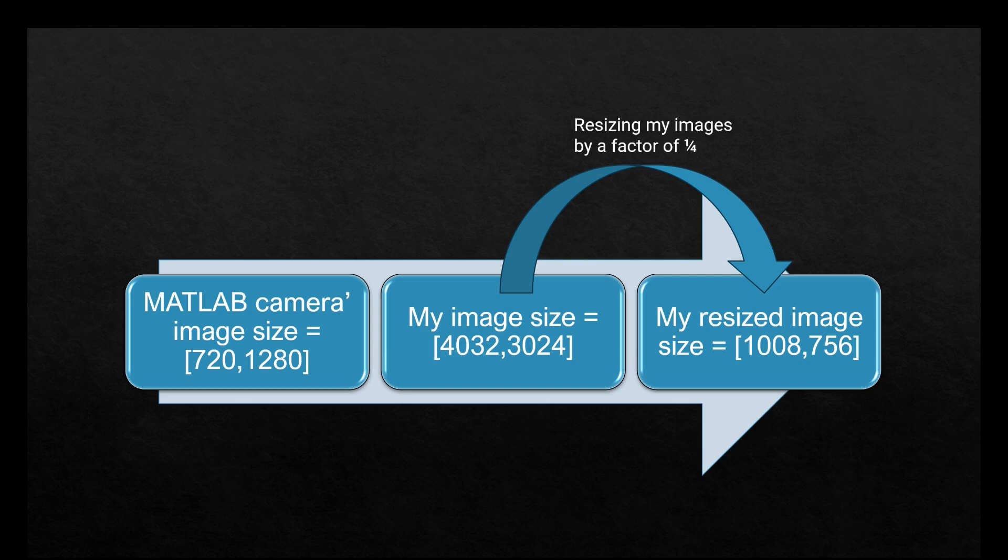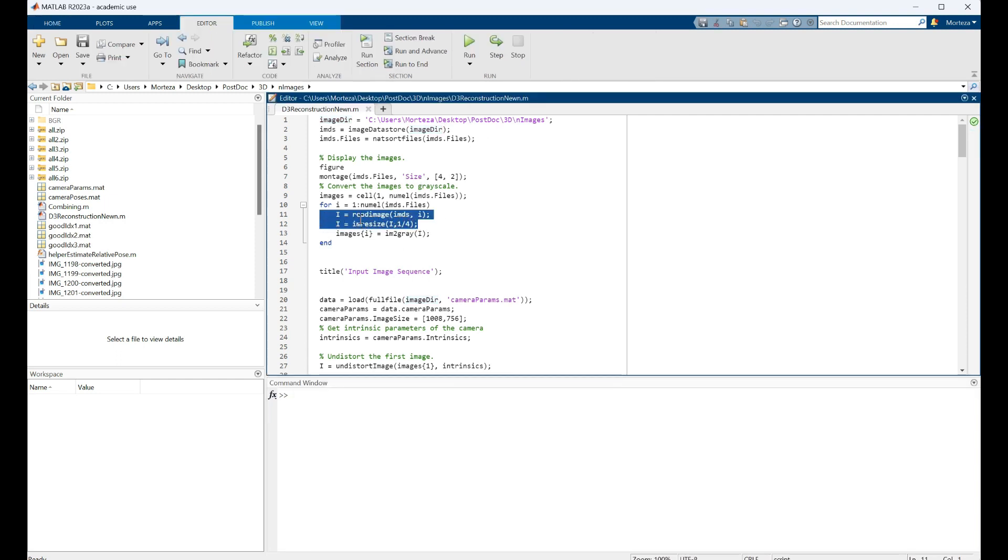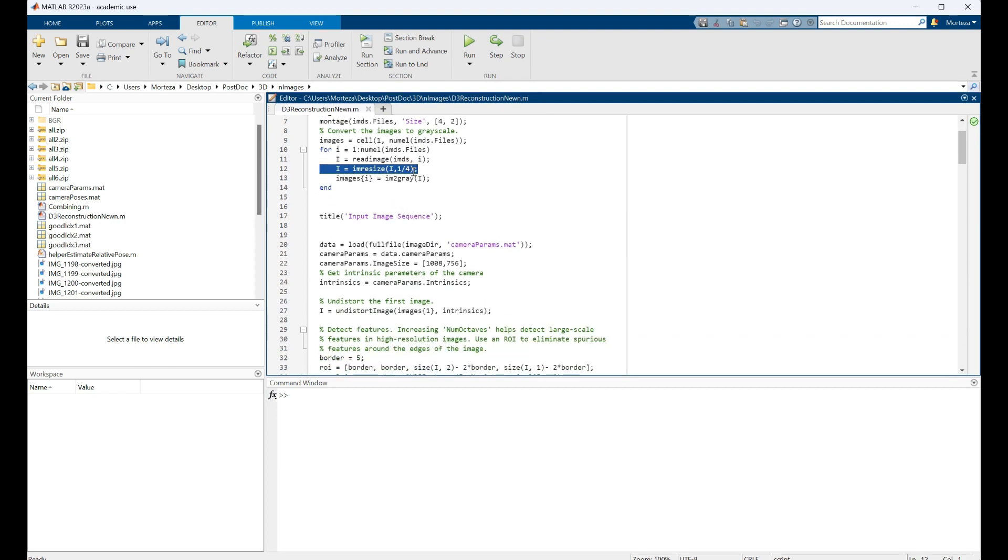Let's go to MATLAB and show you guys what I mean. Okay, here's the script that is already available in MATLAB. First you just have to specify where the images are located and then you just read them. Here I am resizing my images by a factor of 1 over 4, as I said, to make it as close as possible to the size of the images that MATLAB is using.